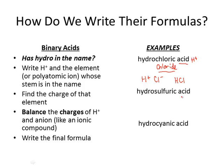Hydrosulfuric acid — same process. 'Hydro' tells me it's an -ide, so I'm looking for sulfide. 'Acid' tells me there's H+. Sulfide is S, and the charge of sulfur is 2−, based on the periodic table. I need to balance the charges: since I have two negative charges, I need two positive charges, which means I need two hydrogens. I get H2S.